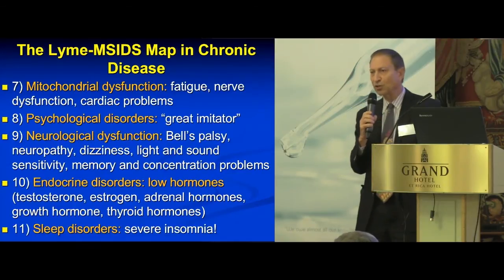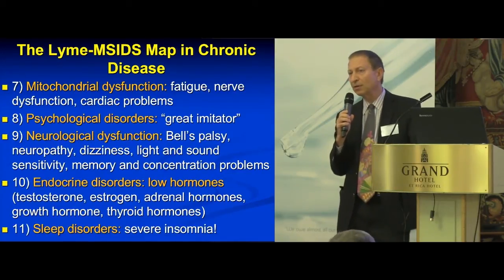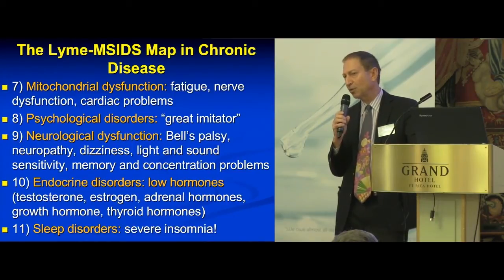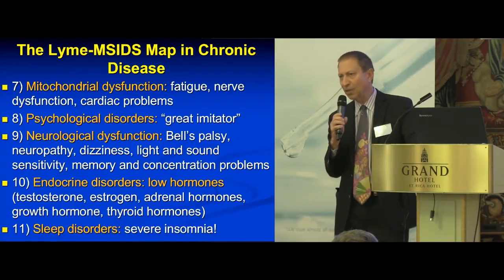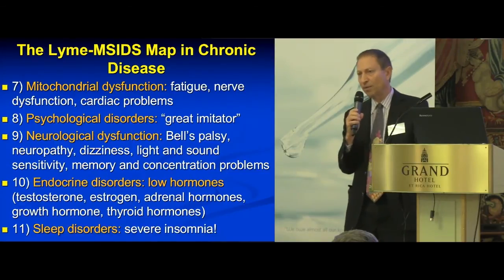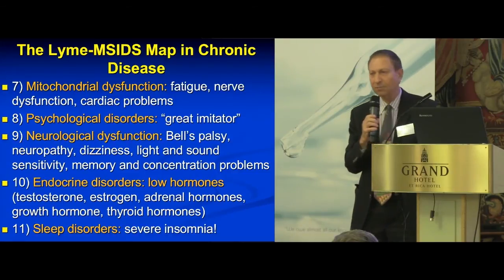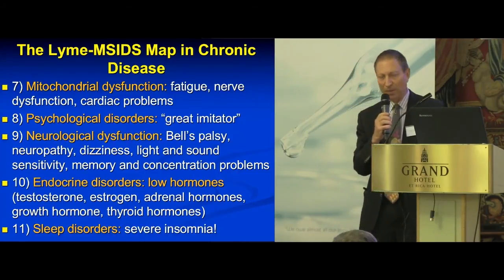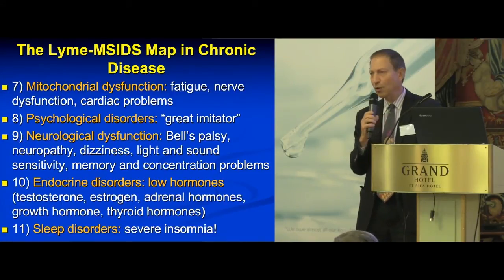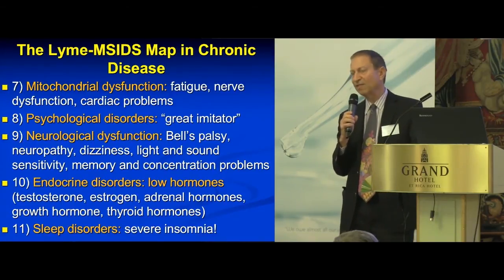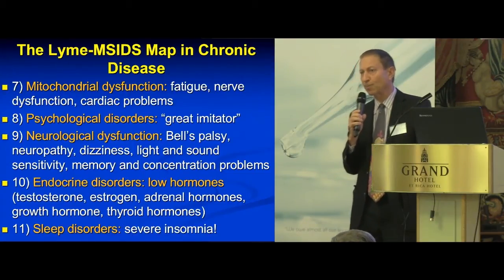The eighth is psychological disorders. Lyme has been published in the medical literature by Brian Fallon and other researchers at Columbia University as imitating every psychiatric diagnosis — from schizophrenia to OCD to post-traumatic stress — every one of them can be caused by Lyme disease. The ninth point is neurological dysfunction, where there are tremendous neurological problems in people with Lyme. At least 70% of my patients have peripheral neuropathy, and neuropathy of the autonomic nervous system causing POTS is a whole other problem causing tremendous difficulties in recovery.